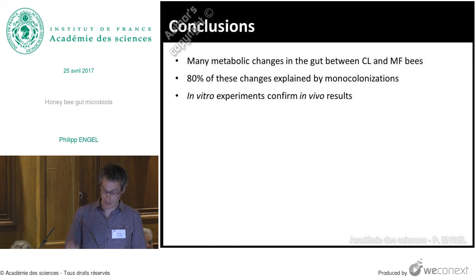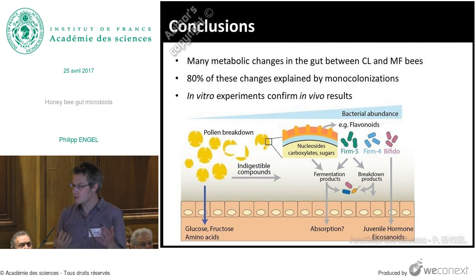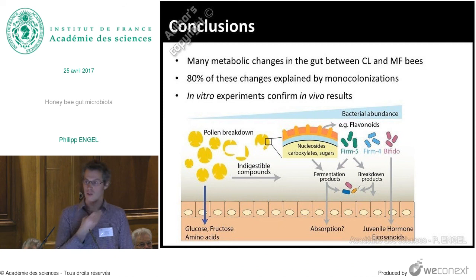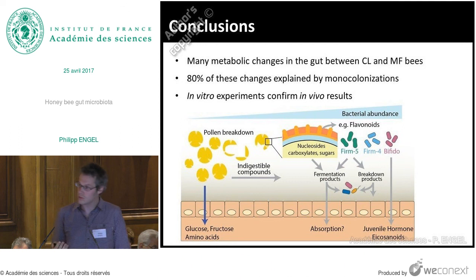In short conclusion: we identified many metabolic changes in the gut between colonized and microbiota-free bees, suggesting this microbiota has a huge impact on the metabolic profile in the gut. 80% of these changes could be explained by monocolonizations, telling us these bacteria seem not to be completely dependent on each other — remarkable given that this microbiota has probably evolved 80 to 100 million years together with its host. Our model suggests the host takes up simple sugars and amino acids from pollen, while indigestible pollen compounds enter the hindgut where bacteria utilize secondary plant metabolites — flavonoids, omega-hydroxy acids, phenolamides present mainly in the outer pollen wall — as well as carboxylic acids, nucleosides, and sugars, leading to fermentation products and breakdown products.